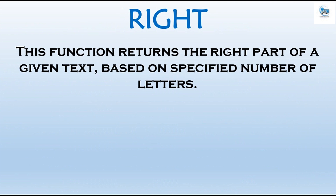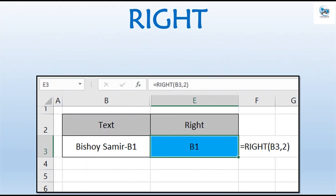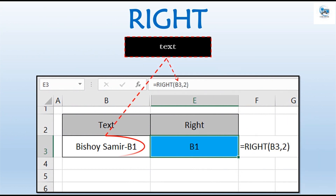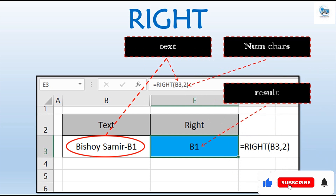RIGHT function. This function returns the right part of a given text based on a specified number of letters. It has the same syntax. So for the same example, if we want to return the 'P1' part, the first argument is the same cell. The second argument is two, and the result would be 'P1'.